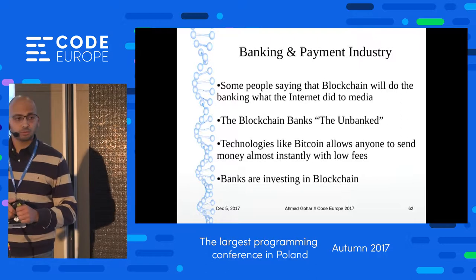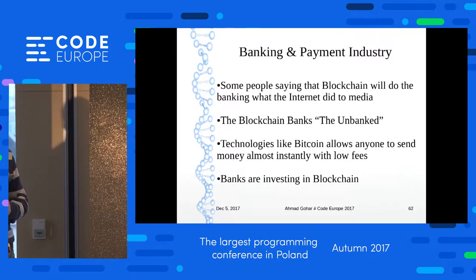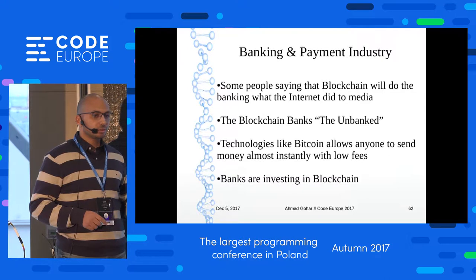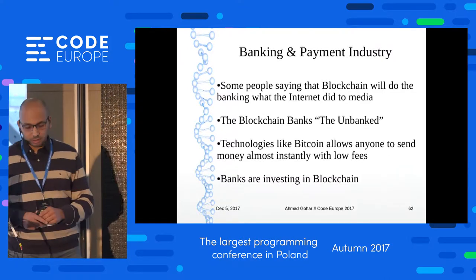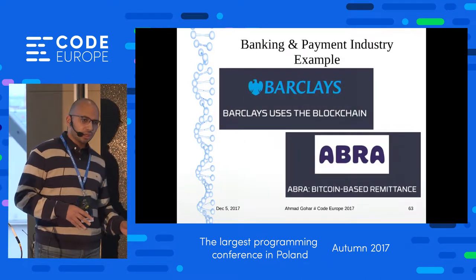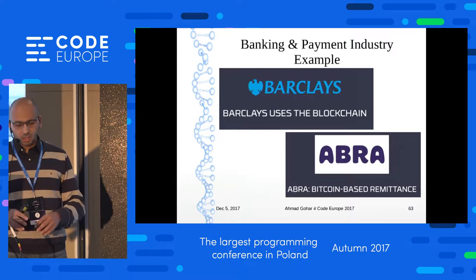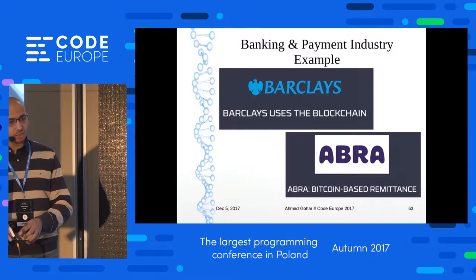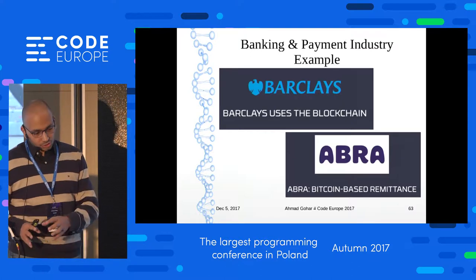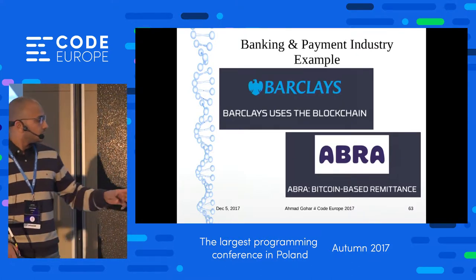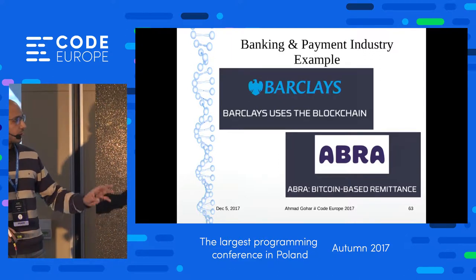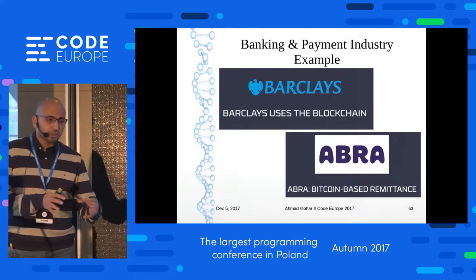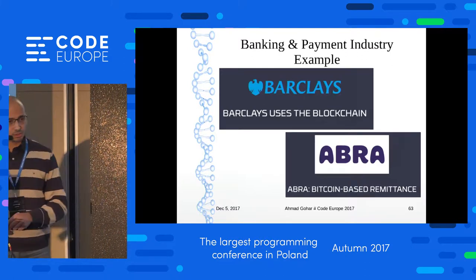Do you know any banks using blockchain in production? Barclays — a big bank based in the UK — realized that blockchain would invade banking and decided to be an industry leader in that sector, so they started investing and changing parts of their business to blockchain. There's also a startup called Abra, based on Bitcoin, which is used to transfer remittances and calculate remittance fees.